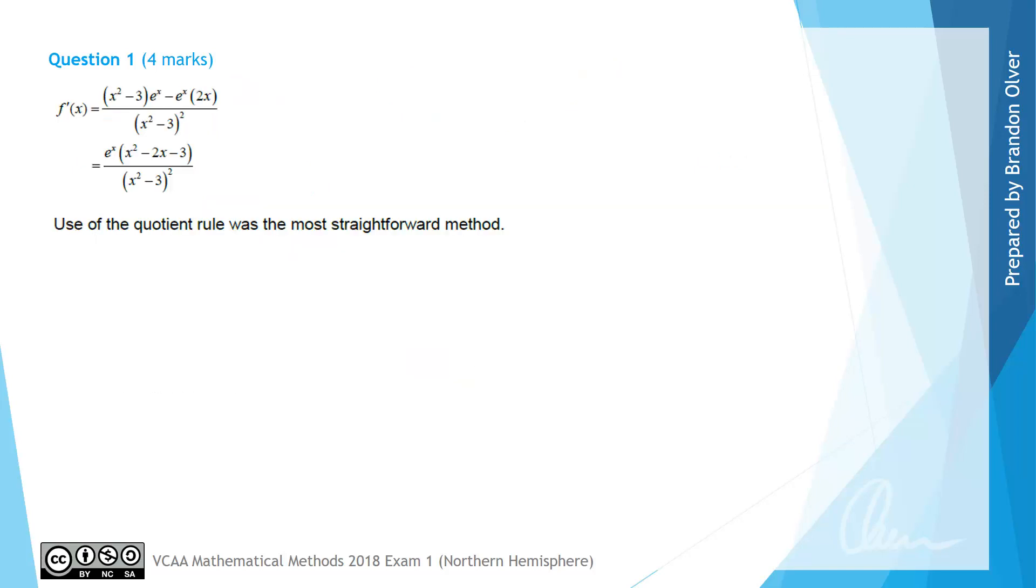In the examiner's report, they mentioned that the quotient rule was the most straightforward method for this question. And also a reminder that any expressions that involve the addition of two or more terms should have brackets around them.